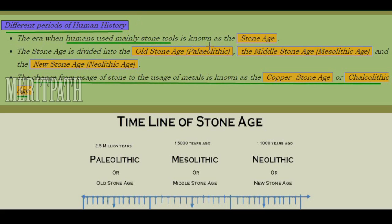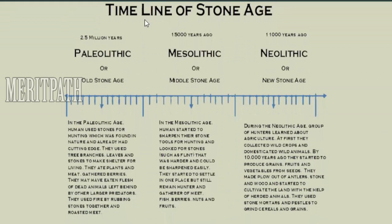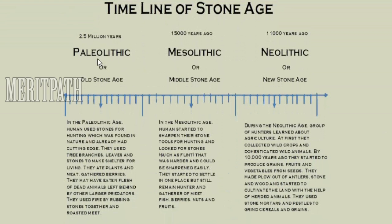Humans mainly used stone tools, and the period when stone tools were used is known as the Stone Age. The Stone Age is divided into three periods: the Old Stone Age or Paleolithic, the Middle Stone Age or Mesolithic, and the New Stone Age or Neolithic. After the Stone Age ended, the use of metals began, and then came the Copper Stone Age, also known as the Chalcolithic Age.